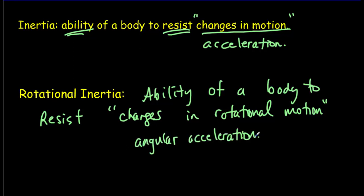In the same way that if there's no unbalanced force acting on an object, it stays at rest if it is at rest, or moves at constant velocity if it's already moving — similarly, if there's no unbalanced torque on a body, it will either stay not rotating, or if it is rotating, it will rotate at a constant angular velocity — what we could also call a constant spin rate or rotation rate.